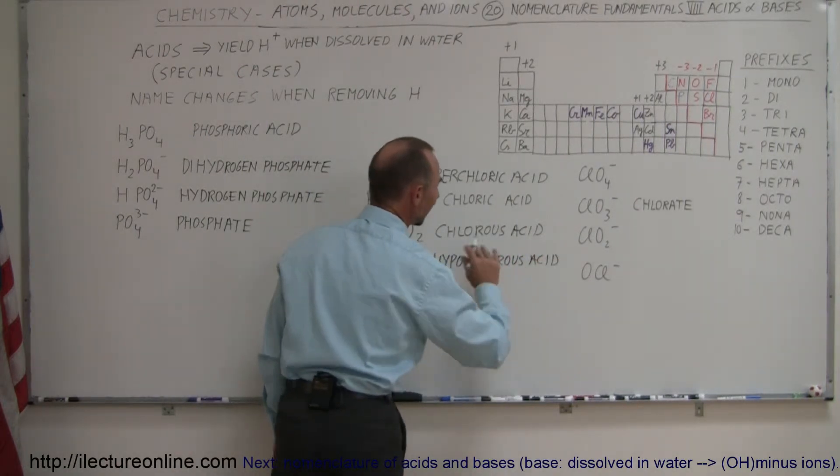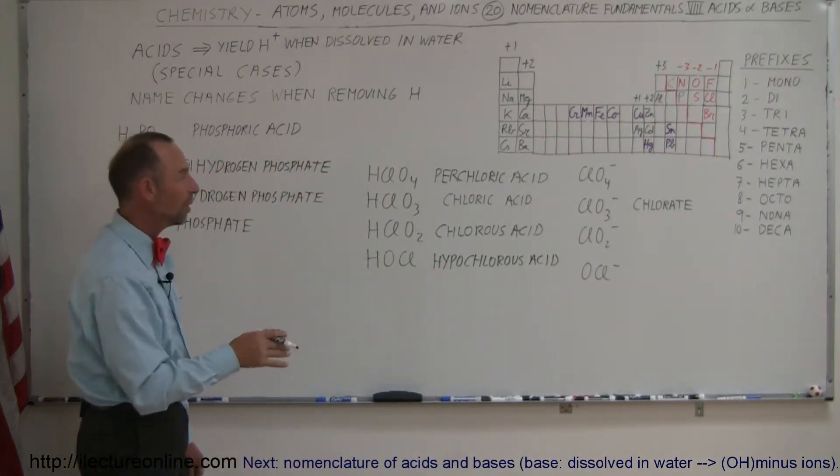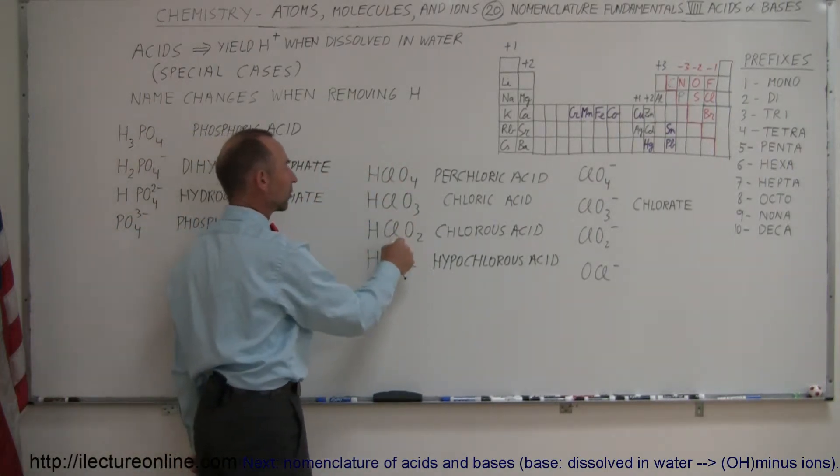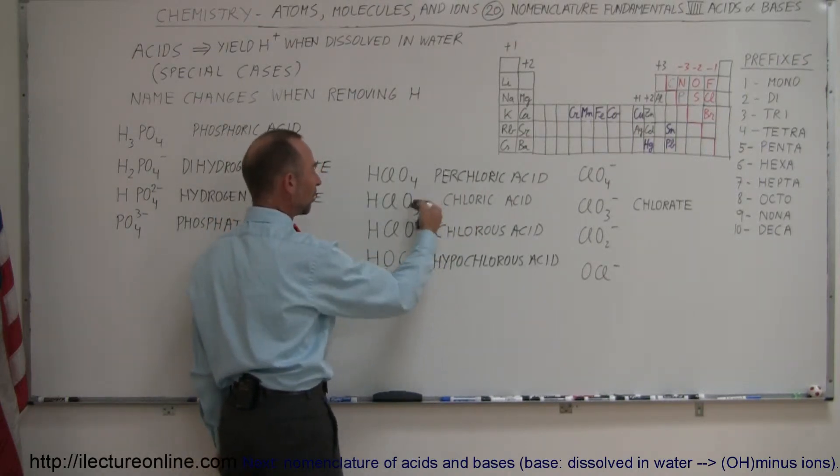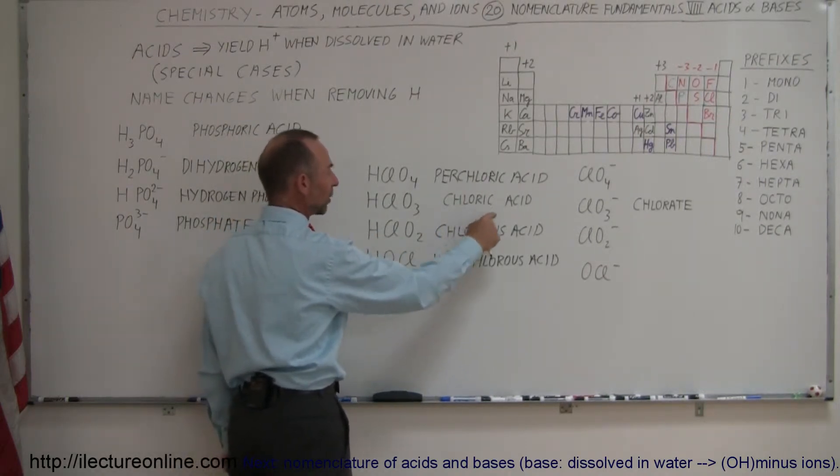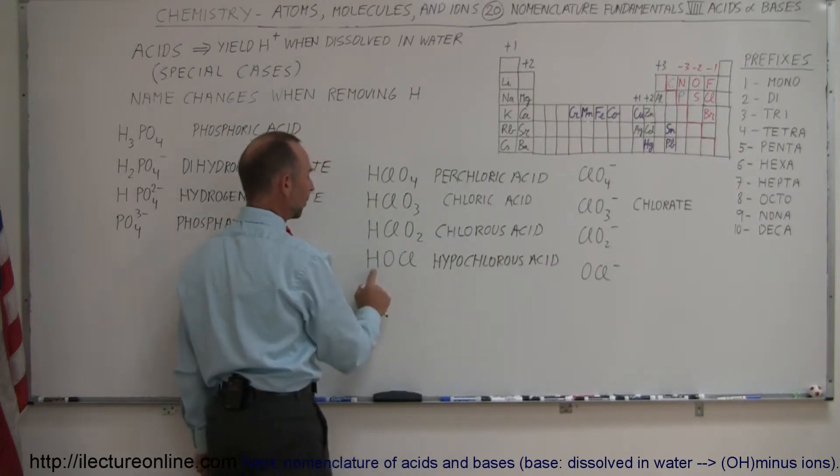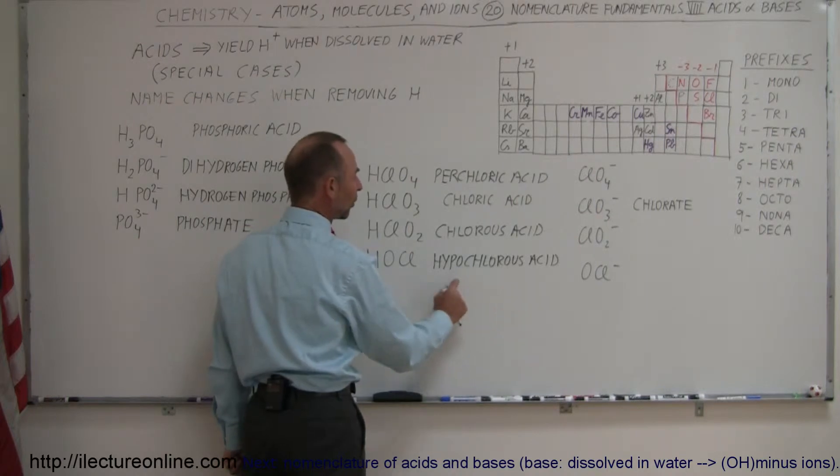So this is again kind of what we saw in the previous video. How we change the name when we add an oxygen, subtract an oxygen, subtract two oxygen. So we go from chloric, we go perchloric. When we remove an oxygen, we go from ick, we call it ous. And when we remove a second oxygen, instead of writing a chlorous, we also put in hypo in front of it, a hypochlorous acid.